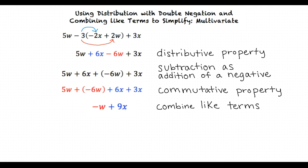Okay I think I understand this now. So if we are given a multivariate equation we first have to use the distributive property to remove parentheses. Then write any subtraction as addition of a negative. Lastly, use the commutative property to rearrange the terms and combine like terms.